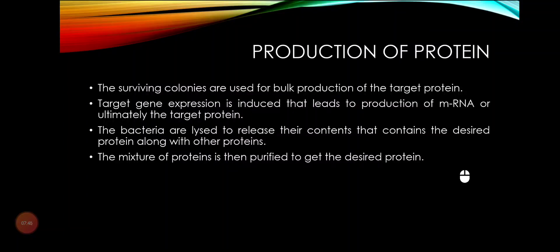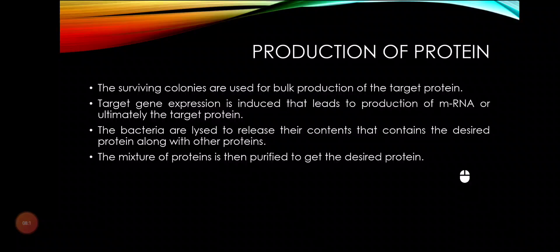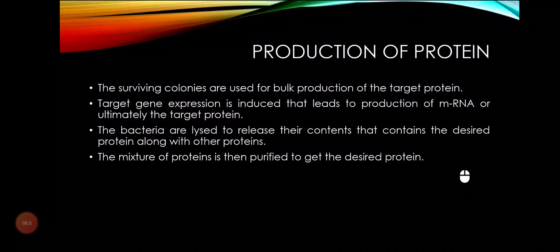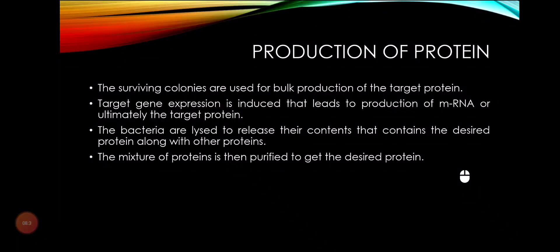The surviving colonies of bacteria contain the recombinant plasmid with our target gene. We then give the bacteria a chemical signal that induces them to transcribe and translate the target gene into our target protein. Since the bacteria also produce a large number of other proteins, our target protein needs to be separated and purified. The purified protein can then be used for various medical or other experimental purposes.